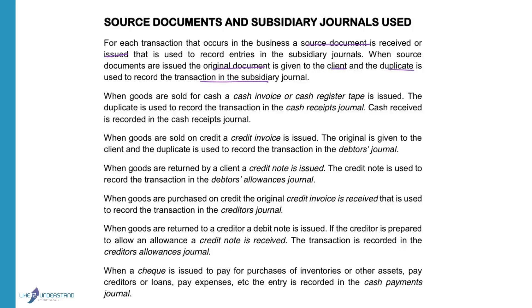When goods are sold for cash, a cash invoice or a cash register tape is issued. The duplicate is used to record the transaction in the cash receipts journal. Cash received is recorded in the cash receipts journal, so all money that you receive will be recorded there and you will issue a cash invoice or a cash register tape for money received.